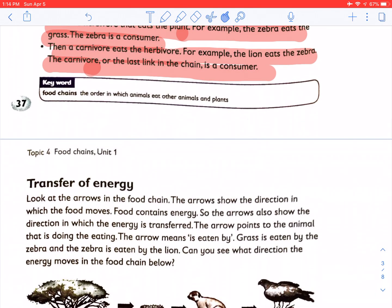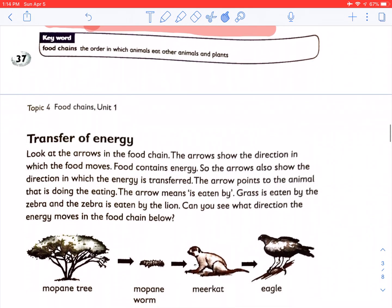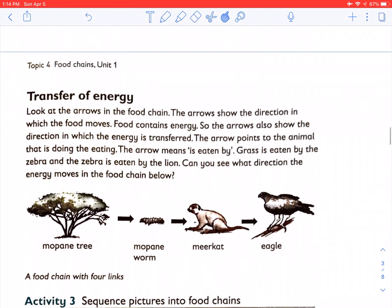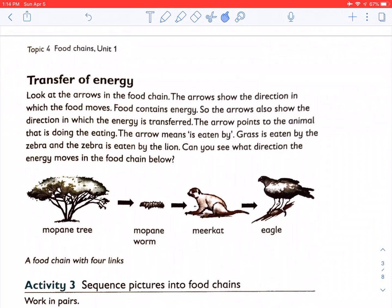We are going to page 38 now in the textbook. Look at the arrows in the food chain. The arrows show the direction in which the food moves. Food contains energy, so the arrows also show the direction in which energy is transferred. The arrow points to the animal that is doing the eating. The arrow means is eaten by. Grass is eaten by the zebra, and the zebra is eaten by the lion. Can you see that the direction of the energy moves in the food chain?